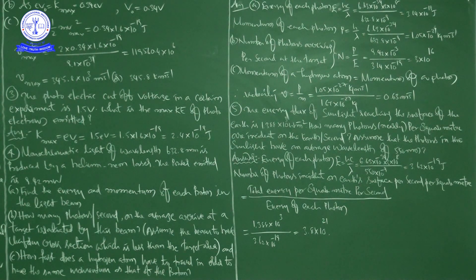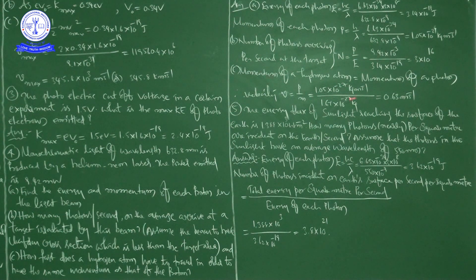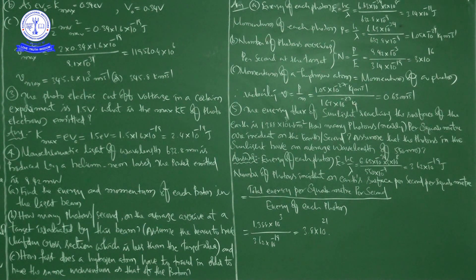For part C — speed of hydrogen atom with same momentum as photon: setting momentum of hydrogen atom equal to momentum of photon, velocity V = P/m = 1.05×10⁻²⁷ divided by 1.67×10⁻²⁷, giving V = 0.63 meters per second.